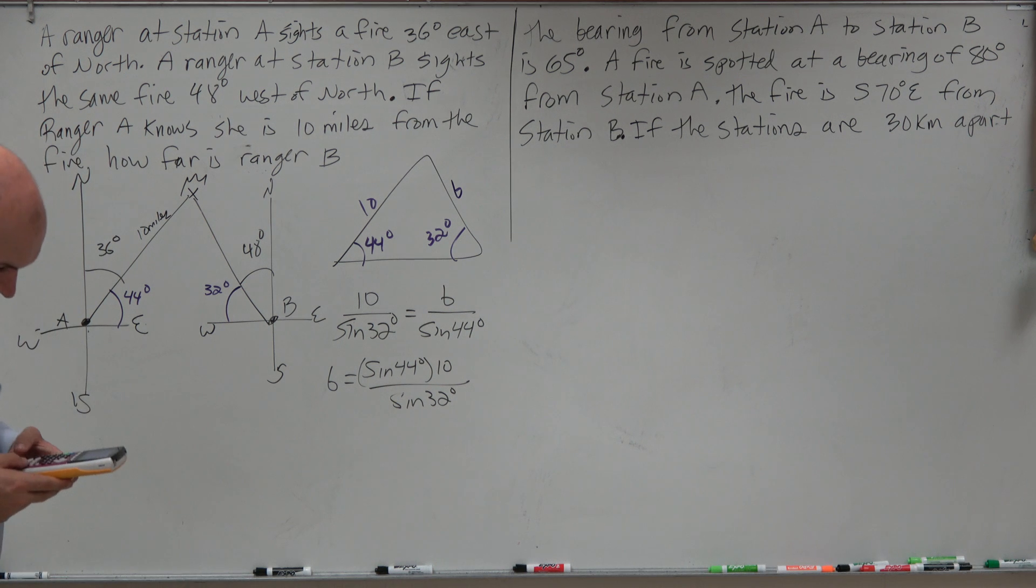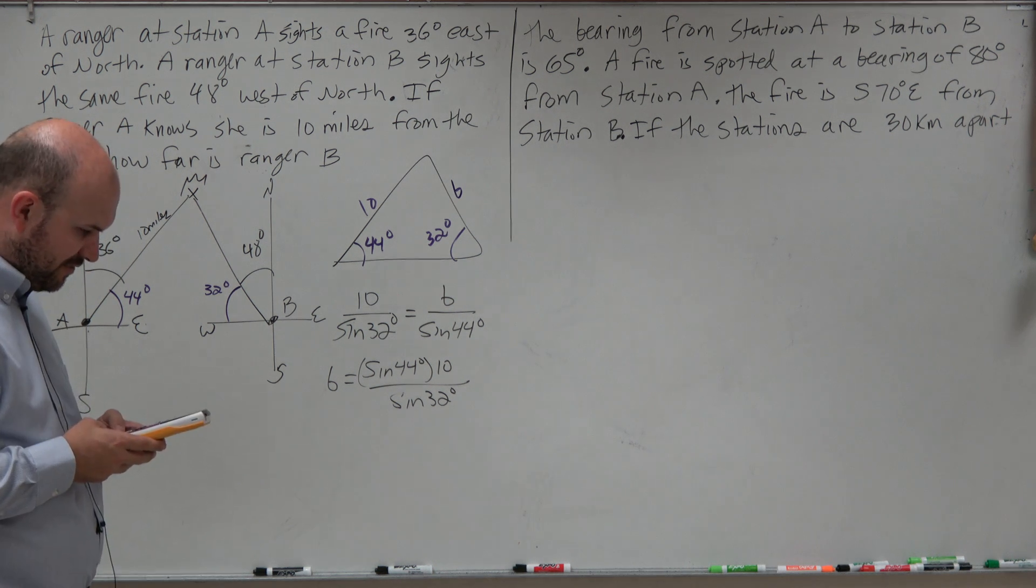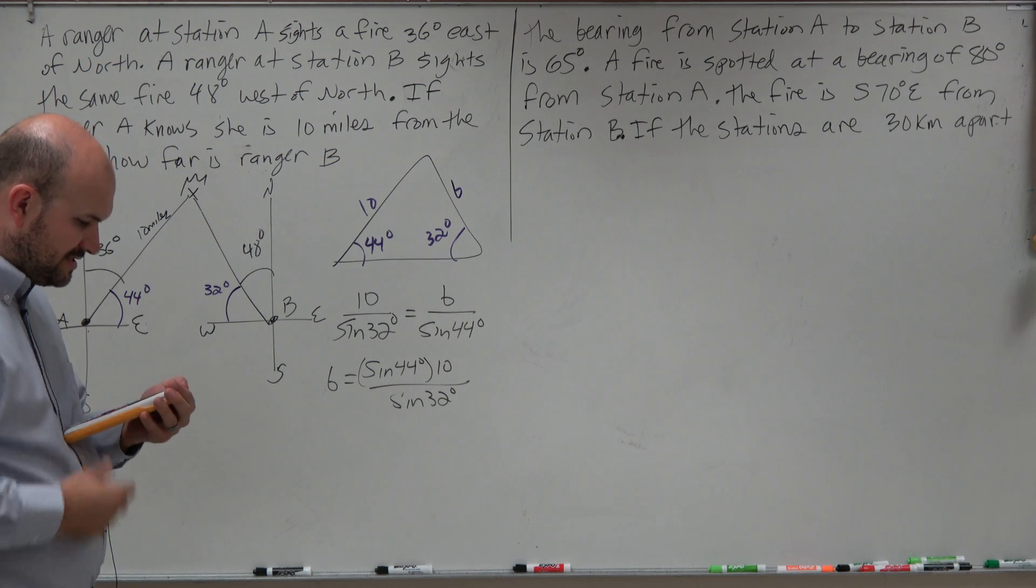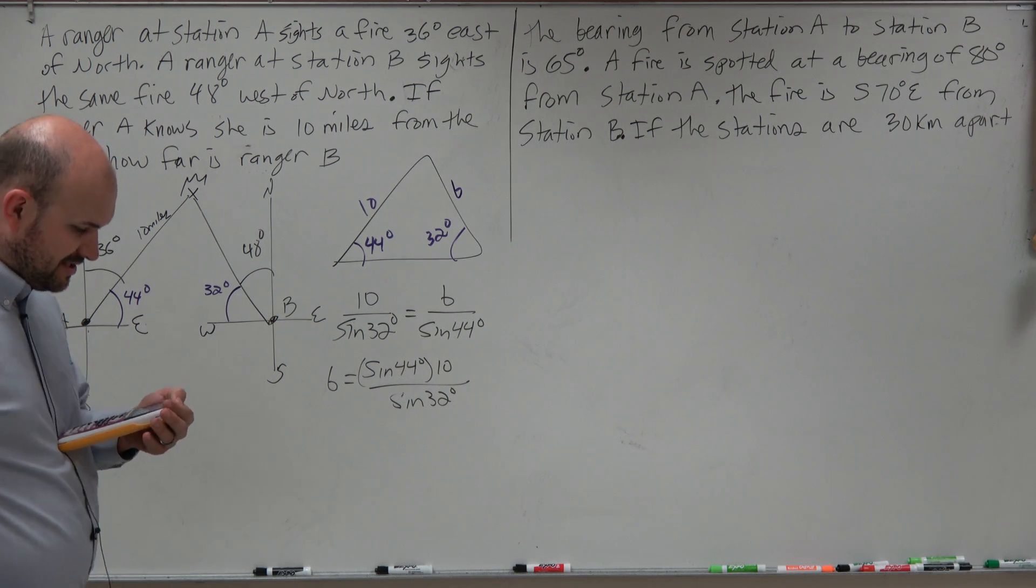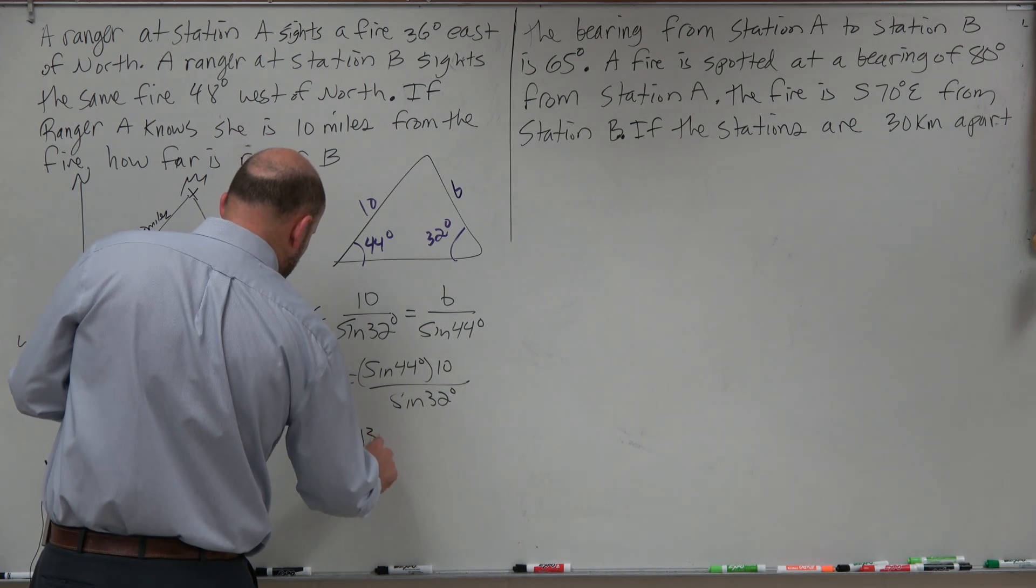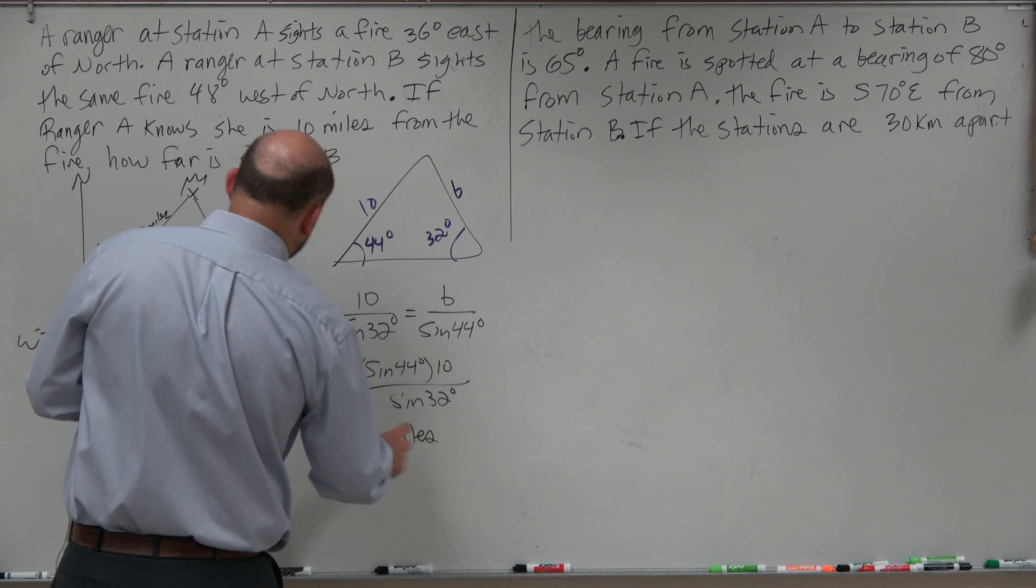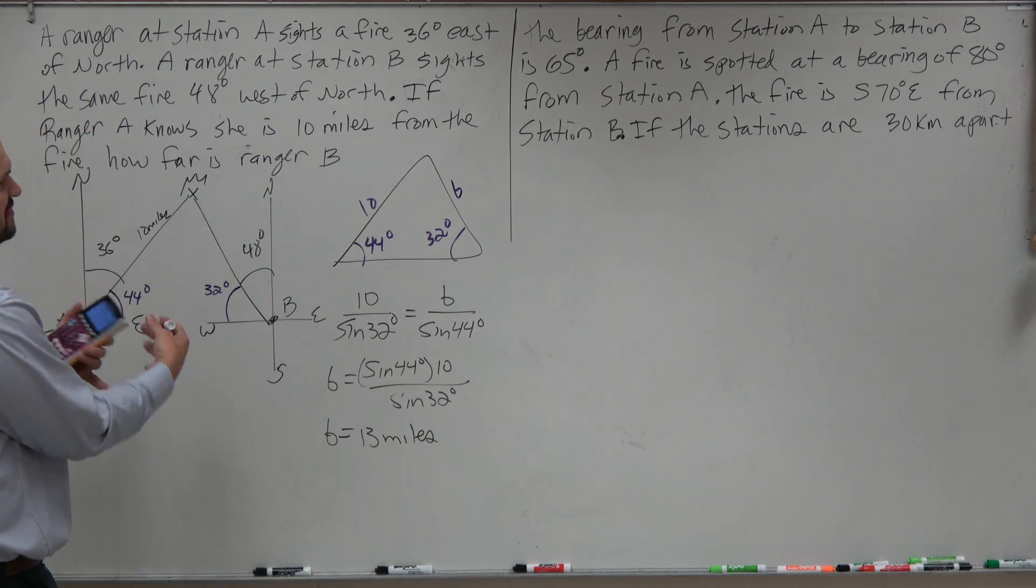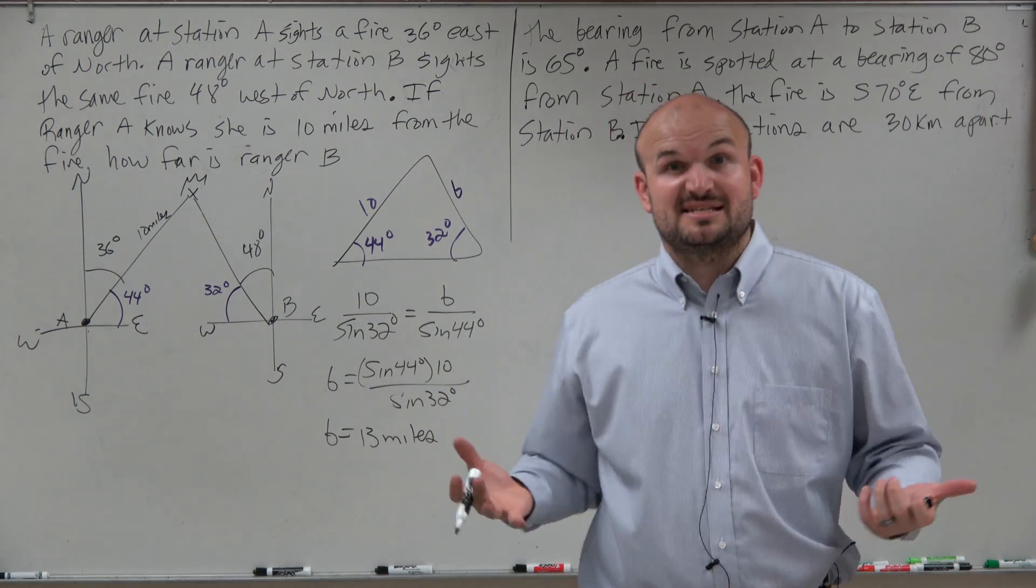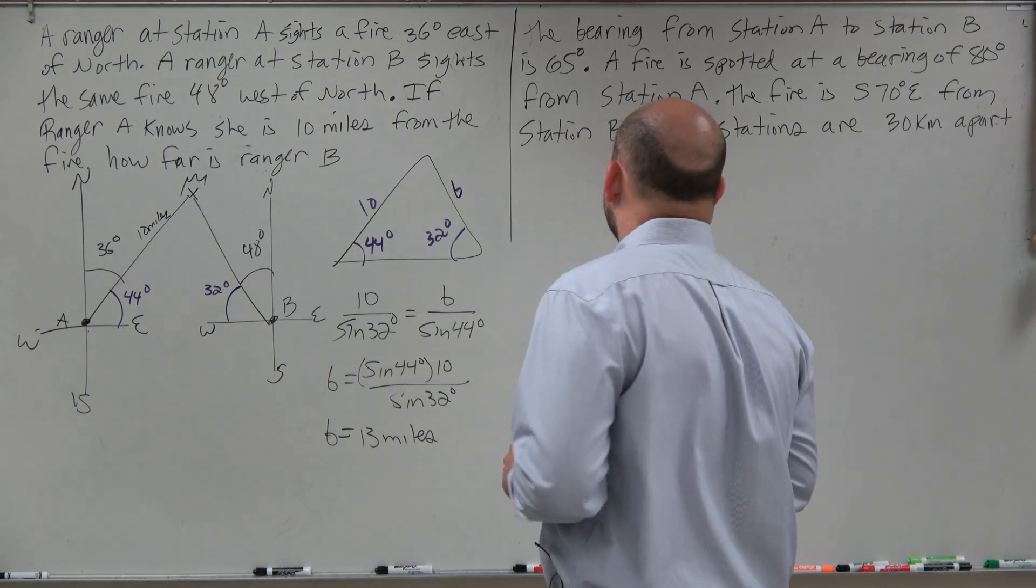I just undid dividing by sine of 44, so I multiplied by sine of 44 on both sides. Therefore, I have 10 times the sine of 44 degrees divided by the sine of 32 degrees. I'm going to round this to the nearest mile. Therefore, B is going to be equal to 13 miles. You can see their angles are relatively close, so therefore their length should be relatively close, and 13 miles does indeed make sense.